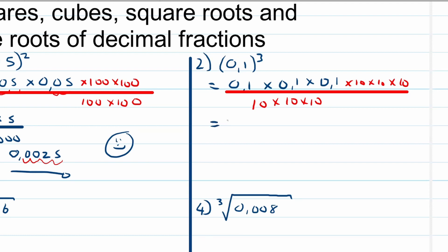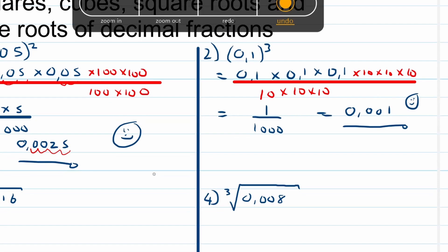The numerator becomes 1 times 1 times 1, which is 1, divided by 1000, which gives us a final answer of 0.001. The comma had to move one, two, three decimal places to the left to get our final answer.